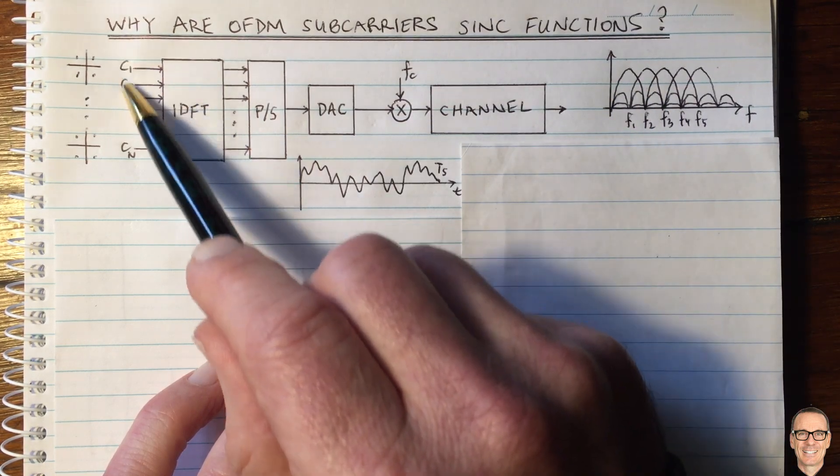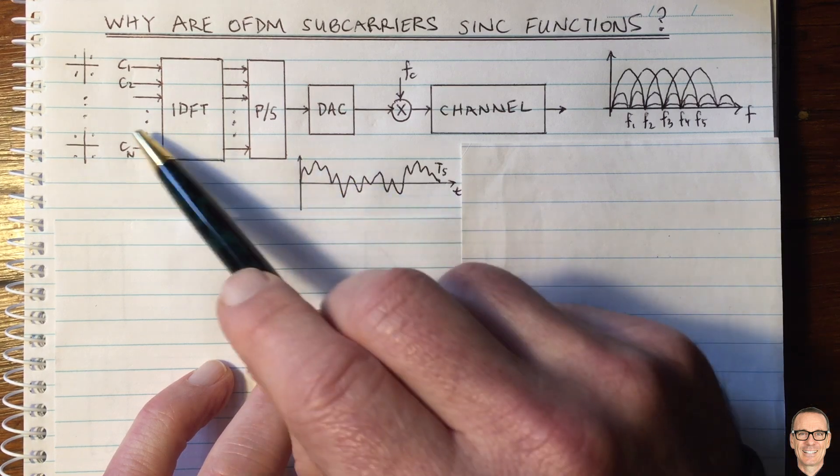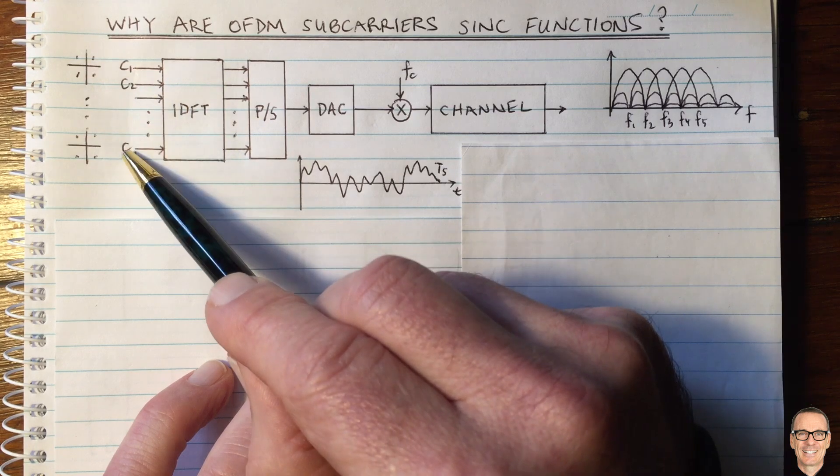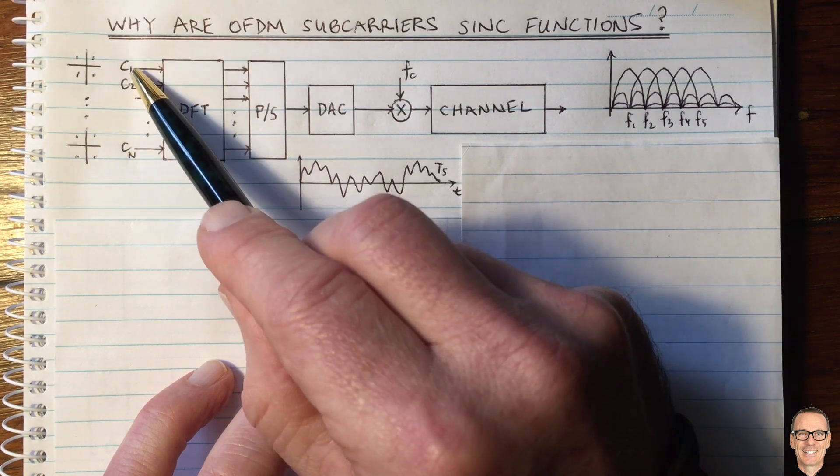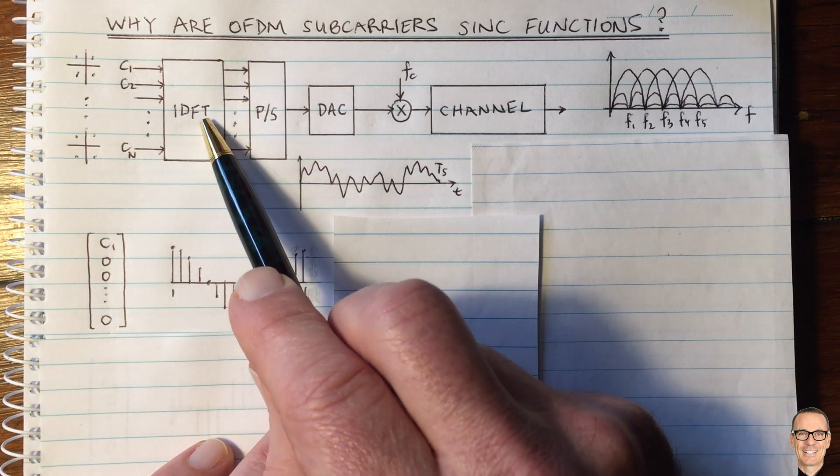Well, let's take one example of an input vector from here, and think about how that gets transformed. Let's take an example where we put nothing in, zero, into all of the subcarriers except for the first one. So here's the vector here, and when that goes through the IDFT,